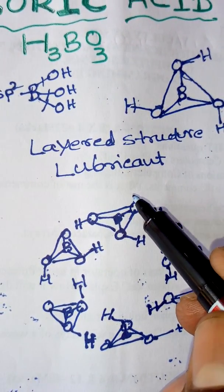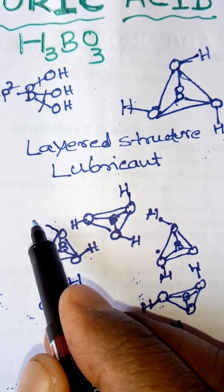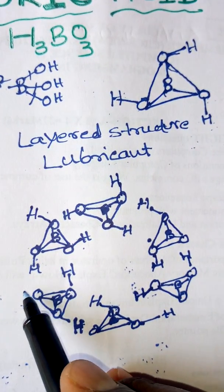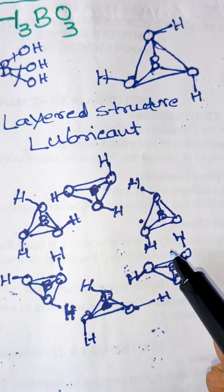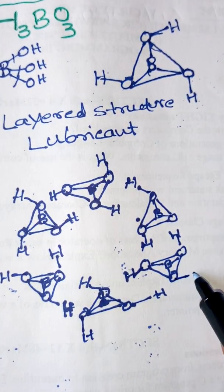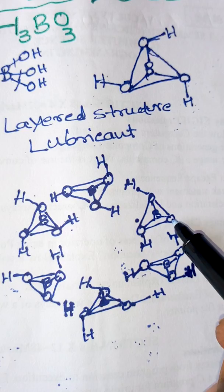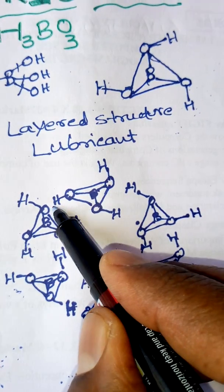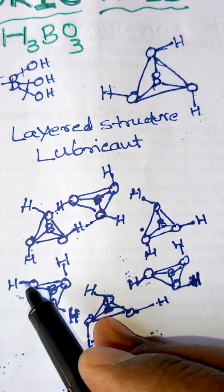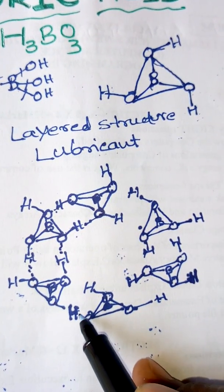We have added one more edge to each boron atom. We make it like this, and here like this, and here like this. Now we show the hydrogen atoms, and here we form it like this.